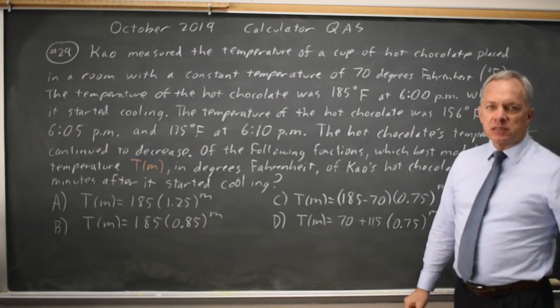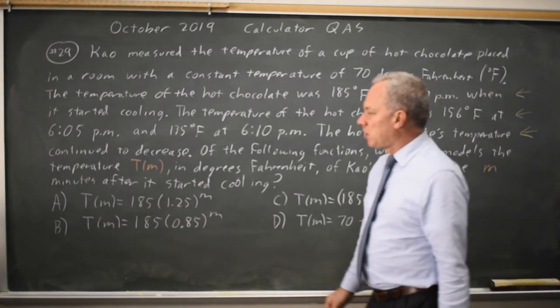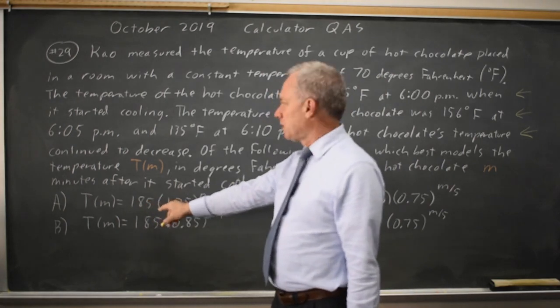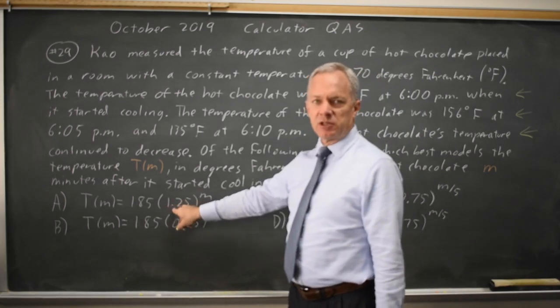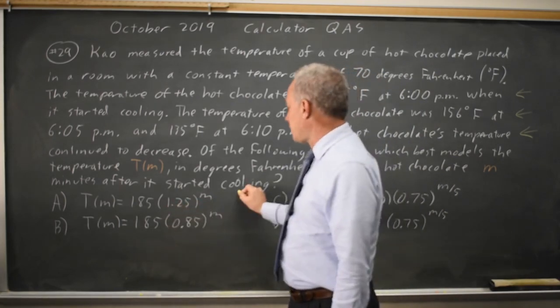This is much easier as a calculator question, although we can rule out choice A immediately. The temperature of the hot chocolate continues to decrease. Choice A is increasing as m increases, so that cannot be correct.